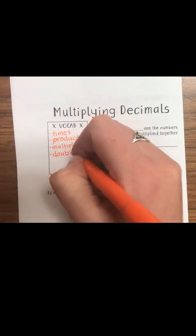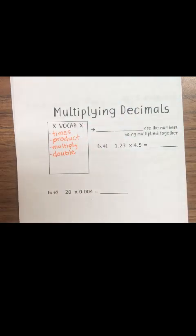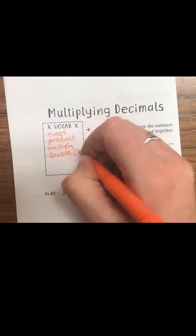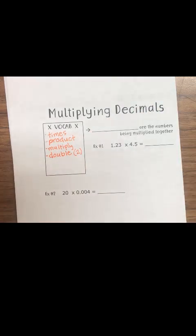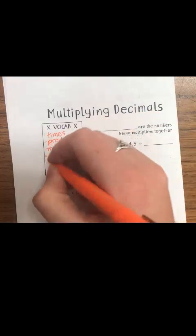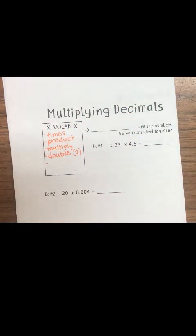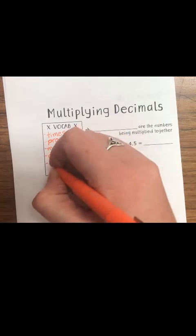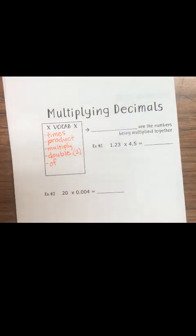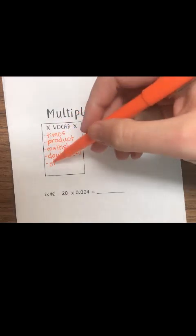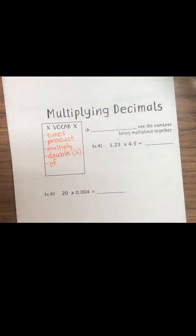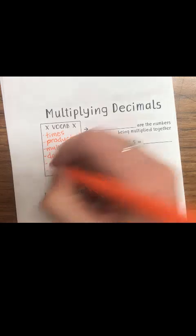Another vocabulary word is 'double.' If something is doubled, what are we multiplying by? We would be multiplying it by two, because if I want double the amount, that means two times the amount. Another vocabulary word is 'of' — if we have a fraction followed by the word 'of,' that means to multiply. So 'of' still means to multiply in any case.